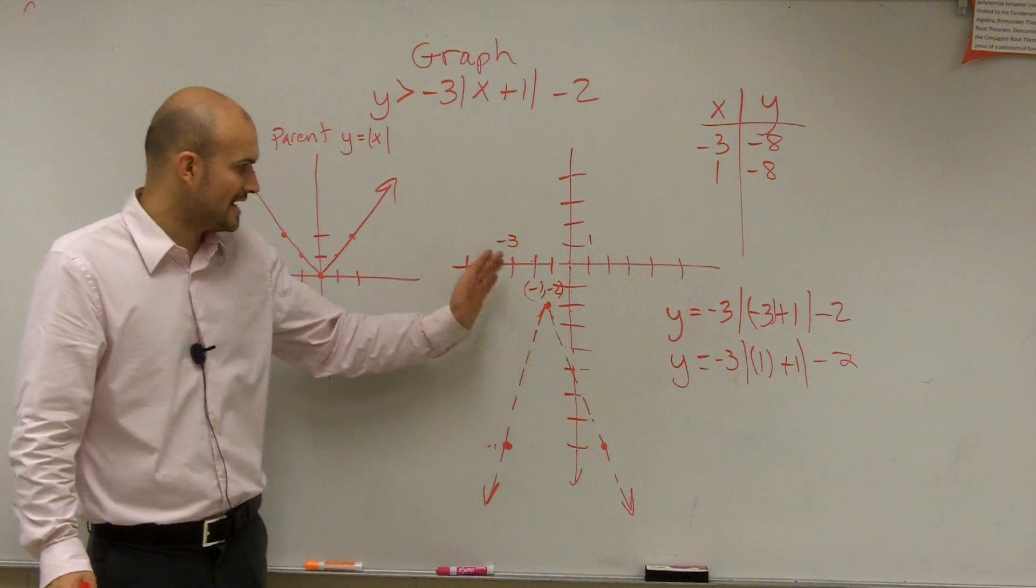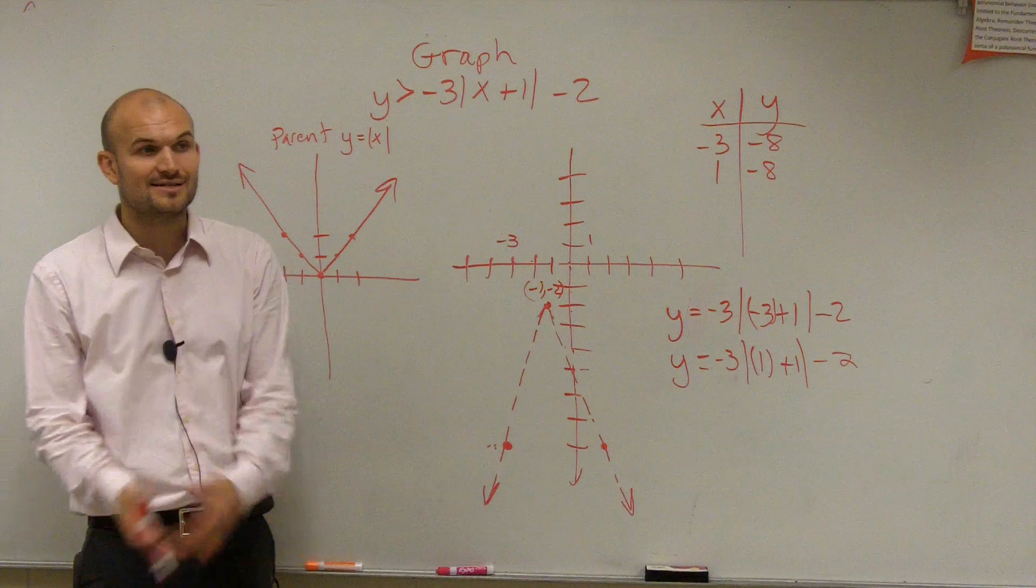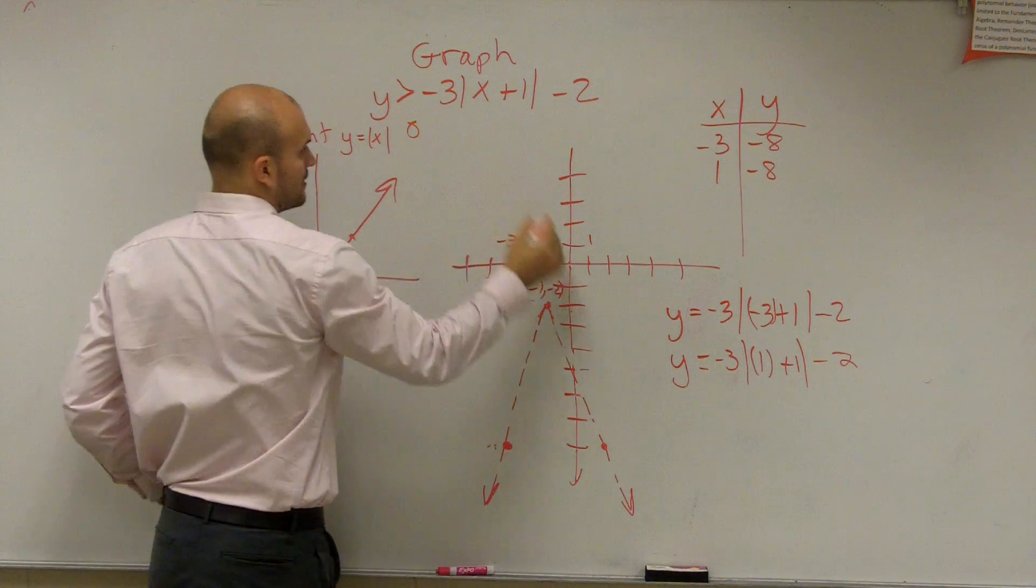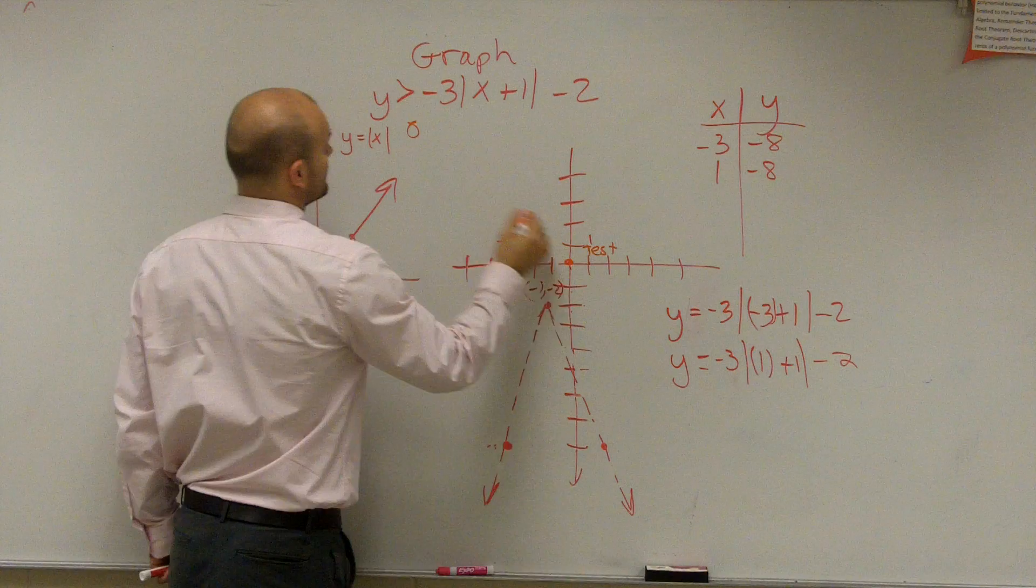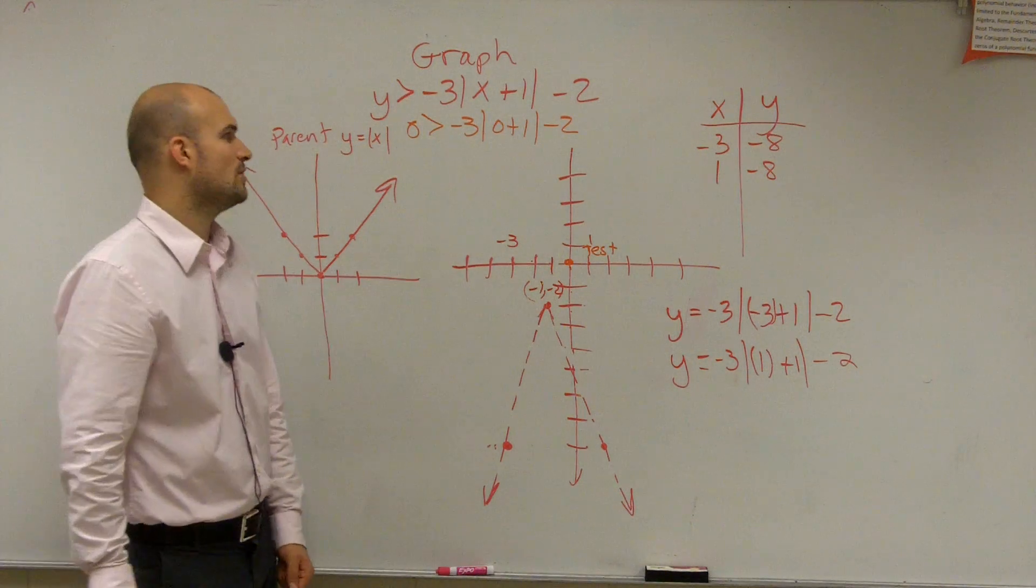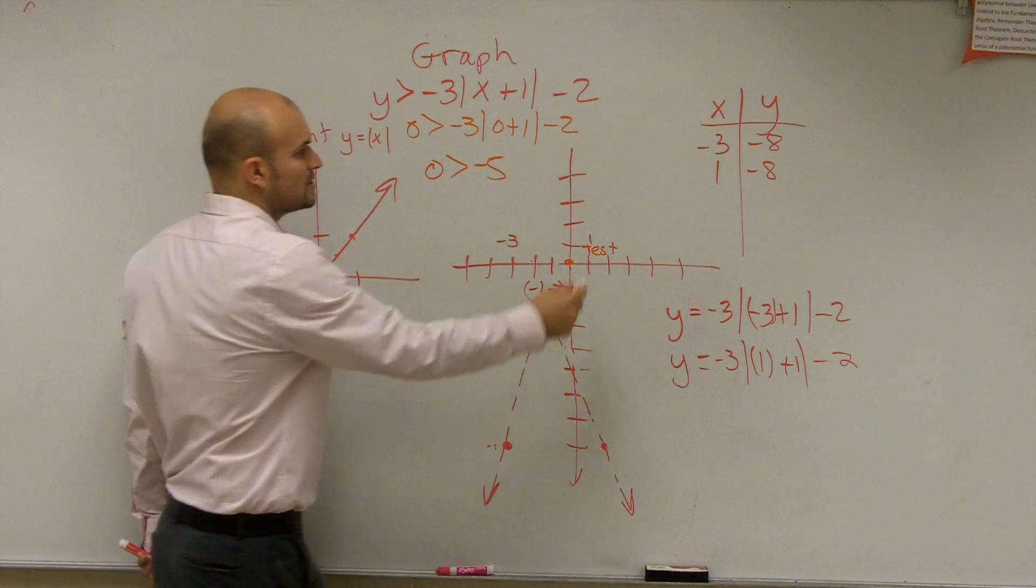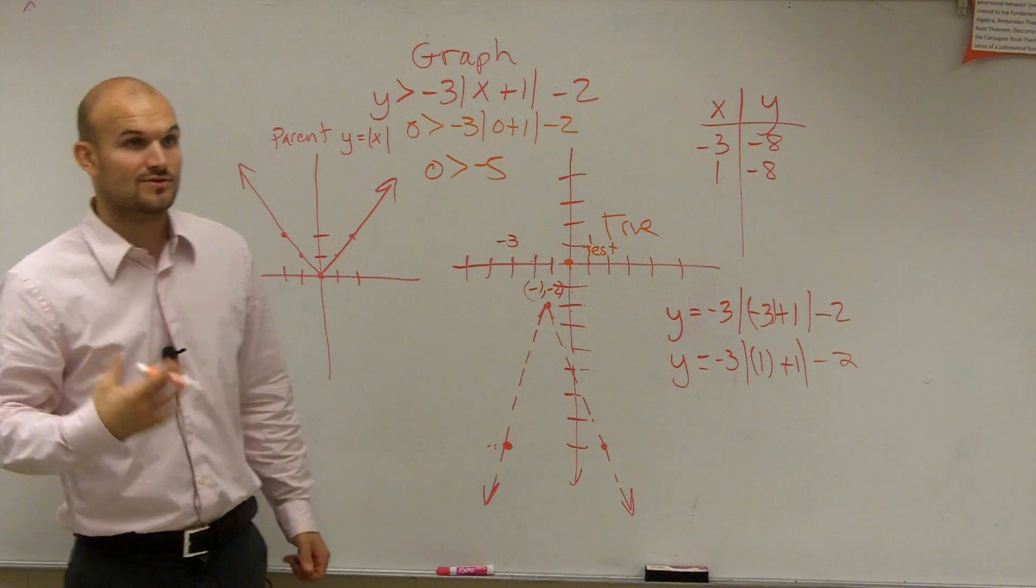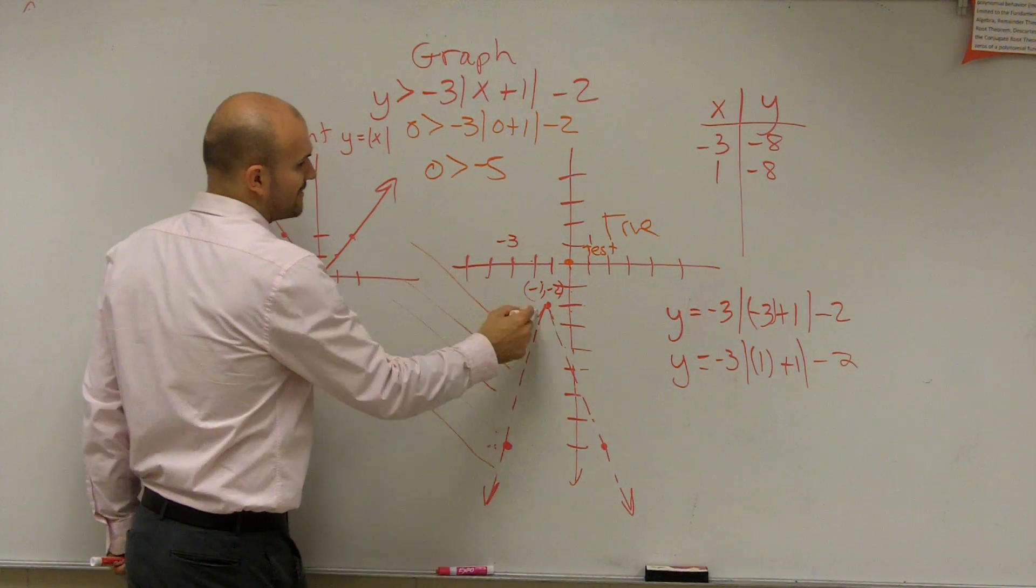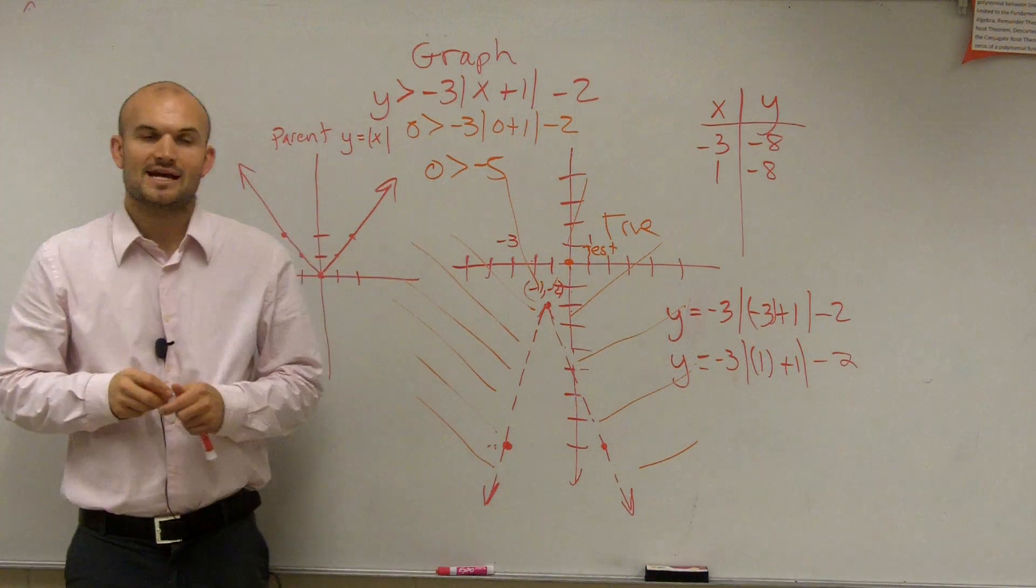Now how do we determine where to shade? Do we shade outside or inside the function? We need to pick a test point. And the best test point ever in the world to pick, as long as your graph doesn't go into it, is 0, 0. Why make work so hard on yourself? So let's just pick 0 for x and 0 for y. I do 0, 0 and I do test. So 0 is greater than negative 3 times the absolute value of 0 plus 1 minus 2. Put the 0 in for y, 0 for x. 0 plus 1 is 1, absolute value of 1 is 1, 1 times negative 3 is negative 3, negative 3 minus 2 is negative 5. Is 0 greater than negative 5? True. So we write a nice big true so Mr. McLogan knows that you used your test point, you showed your work, and it's true. And then I know that all values outside of the function are going to be true, and all values inside your function are going to be false. And that's what your graph should look like.